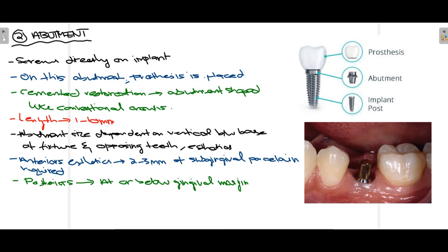The length of a typical abutment can vary from 1 to 10 mm. The size of the abutment is dependent upon the vertical distance between the base of the fixture and the opposing teeth, and aesthetics also play a vital role. For anterior aesthetics, 2 to 3 mm of subgingival porcelain is required, while for posteriors it can be at or below the gingival margin.